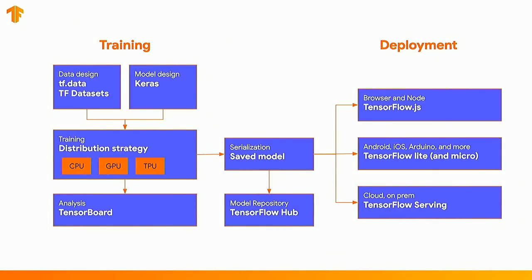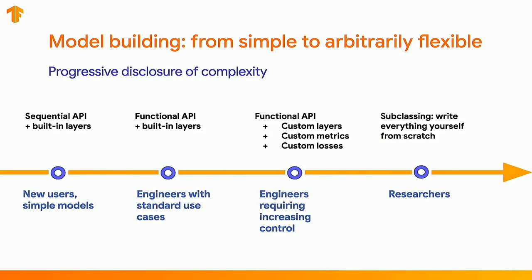TensorFlow 2 is a very large system with many moving pieces — it's a whole framework for doing machine learning. What I'd like to do is show you a couple of the pieces and your options for using it. We'll start with designing models using the Keras API. In TensorFlow 2, there's a spectrum of use cases, all built into the same framework, and you can mix and match as you go.